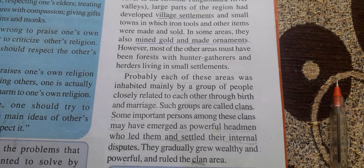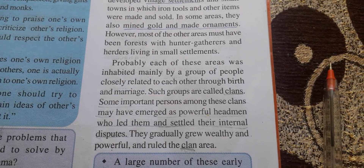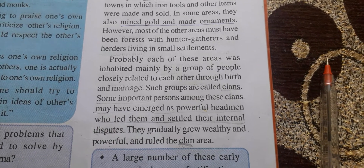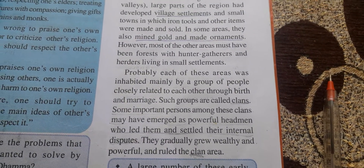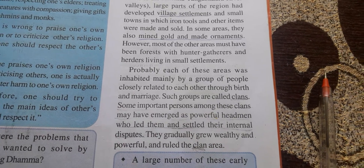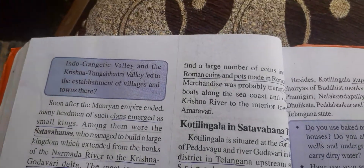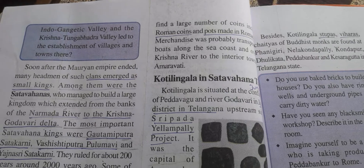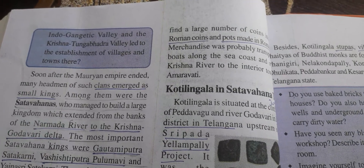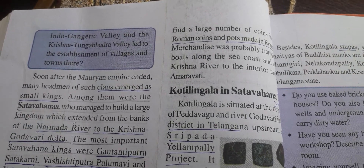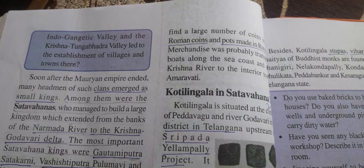As we learned previously about Koyas and tribes, these areas had a headman to solve disputes among the people. People belonged to close relatives through birth and marriage — such groups are called clans. Some important persons among these clans emerged as powerful headmen who led them and settled their internal disputes. Those are called headmen or patla. They gradually grew wealthy and powerful and ruled the clan area.